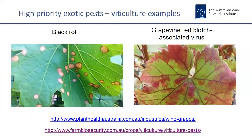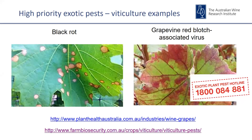Other high-priority exotic pests include black rot and grapevine red blotch associated virus, both of which have quite distinctive symptoms. You might confuse black rot with spray drift, but if there's no spray drift risk, black rot should be considered. Red blotch has a unique appearance — nothing else really looks like it. For more information, there are links to Plant Health Australia and Farm Biosecurity websites, where you'll find the industry biosecurity plan and biosecurity manual for viticulture, with photographs and management guidance.